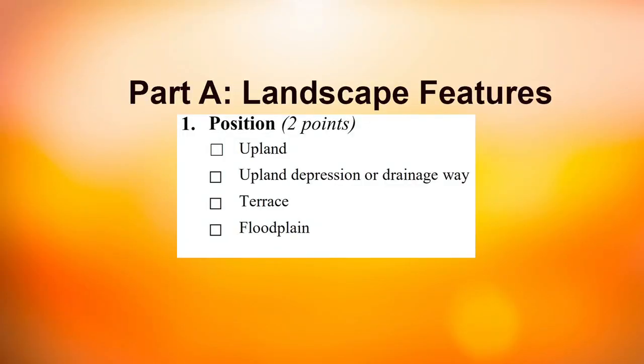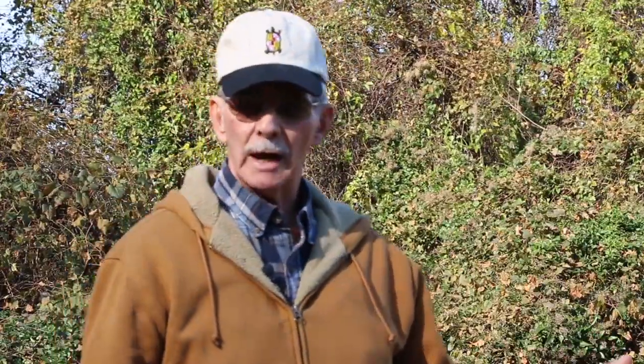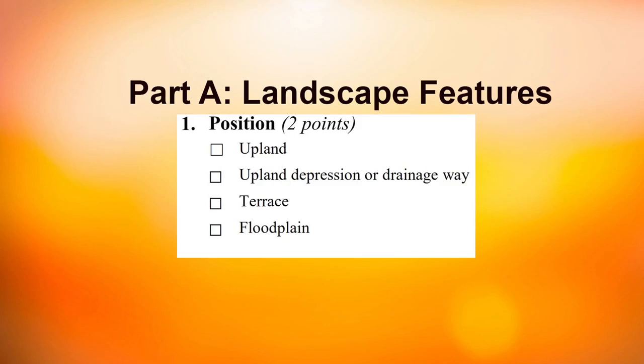First is position on the landscape. The choices on your scorecard are upland, upland depression or drainage way, terrace, or floodplain positions. Each of those positions would dictate a different name of soil series like Sassafras, Mattapique, or Hagerstown as we move across different series across the state. In this particular situation, it represents an area that represents a very large portion of the state, which is actually upland.